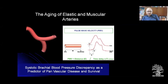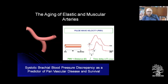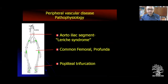Aging involves elastic and muscular arterial changes. There is a measurement called pulse wave velocity, which transmits the pulse from pulsation and depends upon the elasticity of arteries. If pulse wave velocity is high, you have stiff arteries. These are the three sites of vascular surgery for chronic vascular disease.